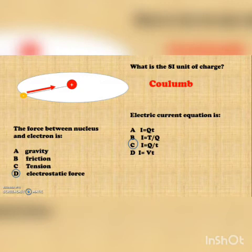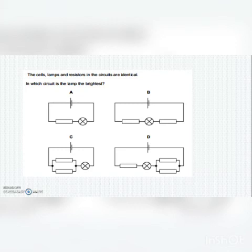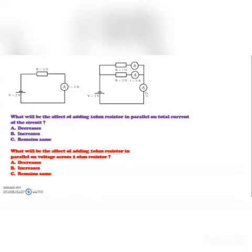The force between the nucleus and electron — options gravity, friction, tension, or electrostatic force — that is electrostatic force. The cell, lamps, and resistors in the circuits are identical; in which circuit do the lamps shine brightest? The correct option is C.